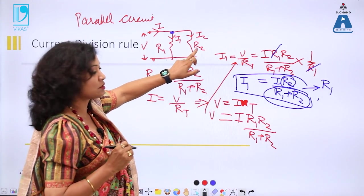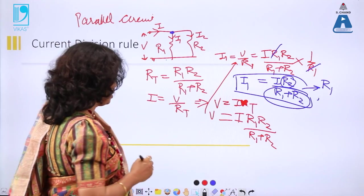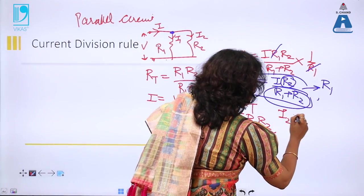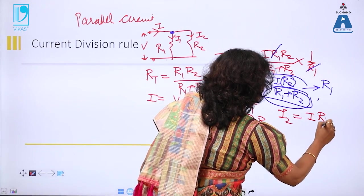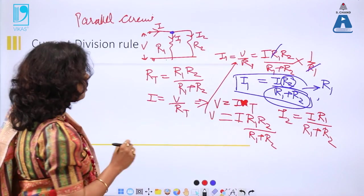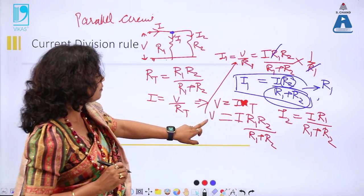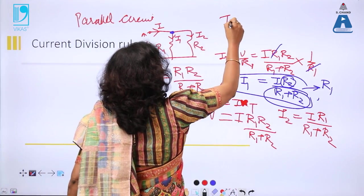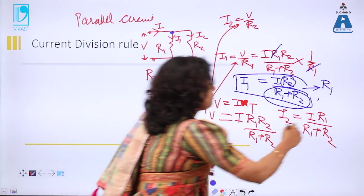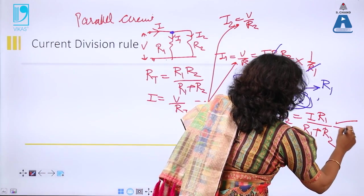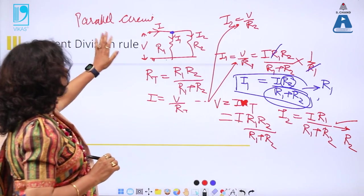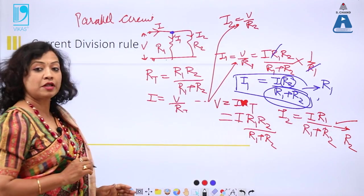Similarly, I2 = I × R1 / (R1 + R2). We can cross-check because the voltage remains the same: I2 = V / R2. This is the current division rule — current divides in parallel and remains the same in series.